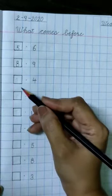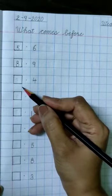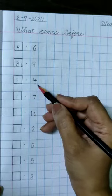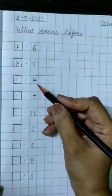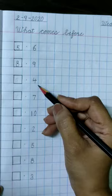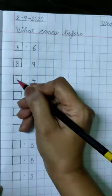Leave one box. Then make a box like this. Put a dot here. And write number 4. What comes before 4? 3-4. 3 comes before 4. So write number 3 here.